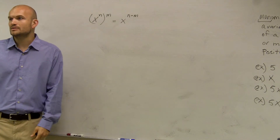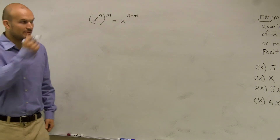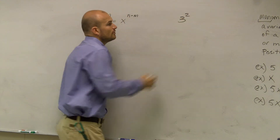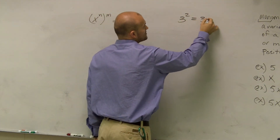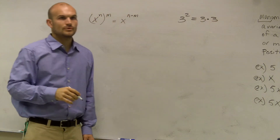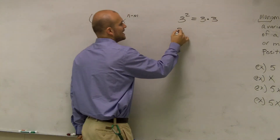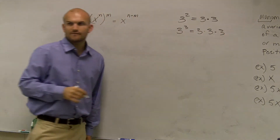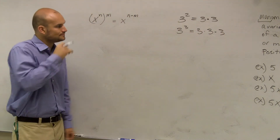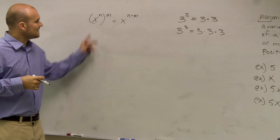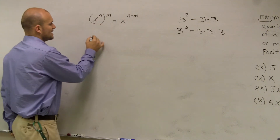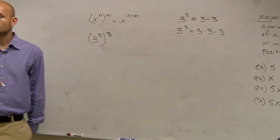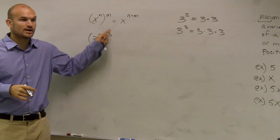Let's use another example with numbers. Remember, 3 squared equals 3 times 3, and 3 cubed equals 3 times 3 times 3 — that was our definition of an exponent. So let's say I have 3 squared, and that whole term is raised to the third power — 3 squared cubed.